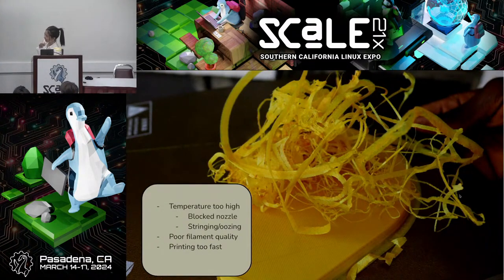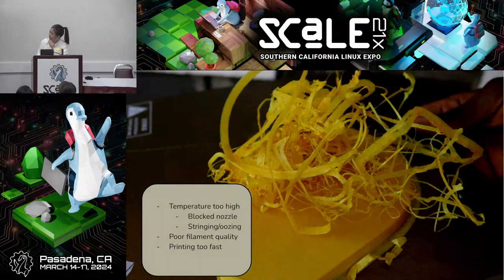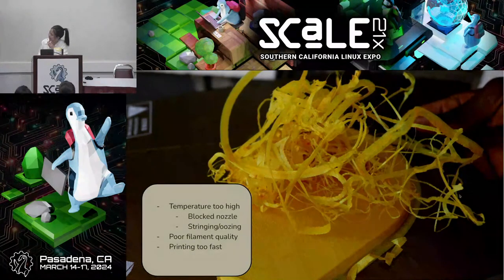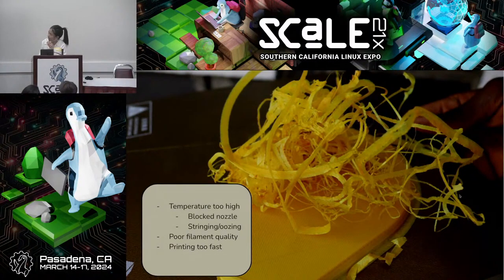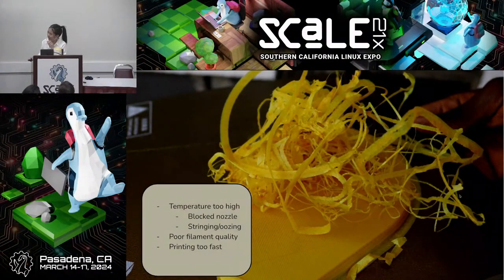But 3D printing can also fail. If the temperature is too high, the filament doesn't print properly. For example, in this photo you can see spaghetting — a term for when the filament looks like spaghetti because it isn't printing properly. This can happen with a blocked nozzle, stringing, oozing, poor filament quality, or printing too fast.